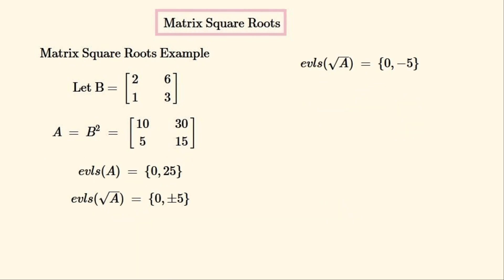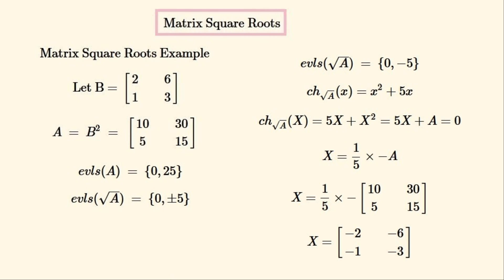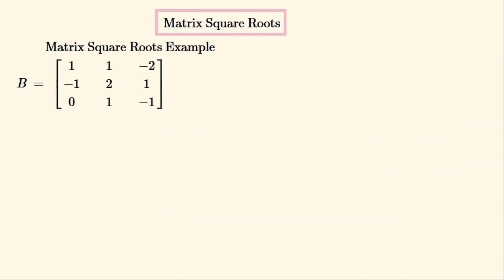We can then try the other eigenvalue, −5, to find the next characteristic polynomial. Here is the characteristic polynomial constructed from these eigenvalues. We substitute X into this equation and A in for X² as before, ending up with a new equation. Substituting A into this simplifies to give us a matrix equal to the negative of B, which is also a square root of A.